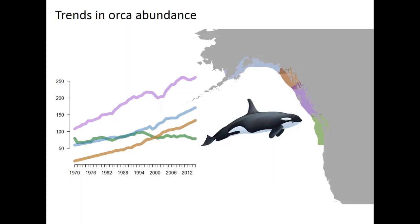A lot of the motivation for this work is rooted in killer whale or orca recovery. There was a blue ribbon panel focused on the southern resident killer whales, shown here in green. Other populations farther north have recovered in recent years, while southern resident killer whale populations have remained relatively flat. The question is: what is preventing that species recovery? Hypotheses include factors like vessel noise and contaminants, and here we focus on prey availability — specifically availability of Chinook salmon as prey to killer whales.